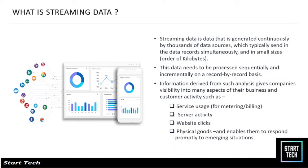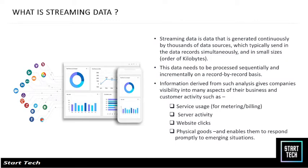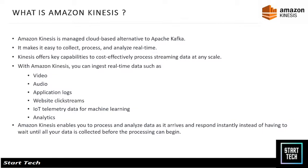On a record-by-record basis, information retrieved from such data is valuable for companies in aspects like customer activities, service usage, user activity, and web logs. For scenarios where we need to take prompt decisions, analyzing streaming data is very important. Amazon Kinesis satisfies this — it is a managed cloud alternative to Apache Kafka.